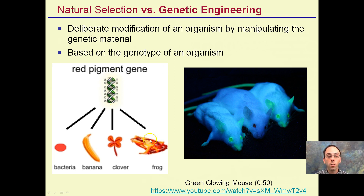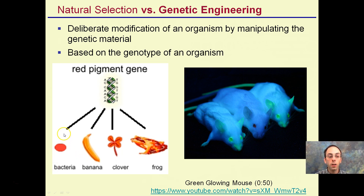Since all genes in DNA use a universal code, we're able to take those genes and modify them. Here, we're taking the genes for a red pigment — we can make bacteria, bananas, clovers, and frogs all red by simply inserting the red pigment gene.